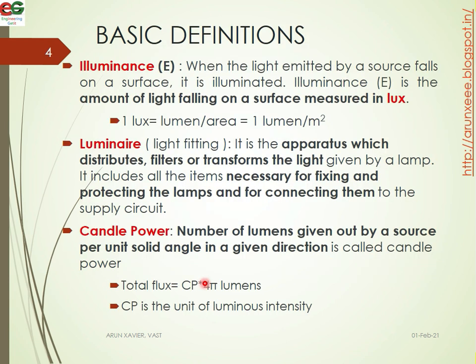Next, illumination. E is the short form. When the light emitted by a source falls on a surface, it is illuminated. Illumination E is the amount of light falling on a surface, measured in lux. One lux is equal to one lumen per meter square.